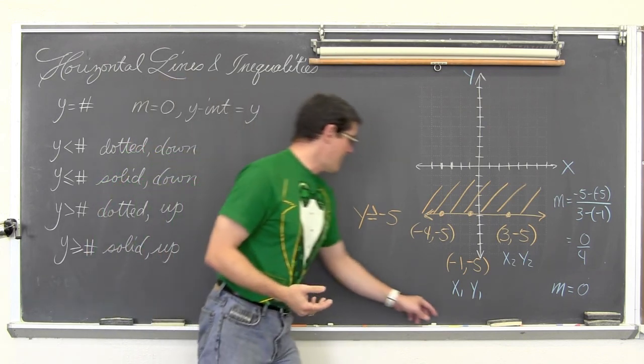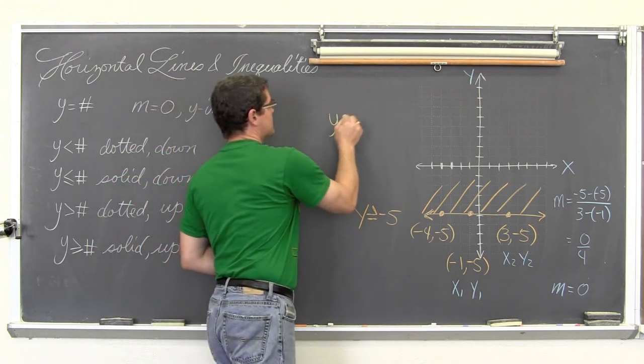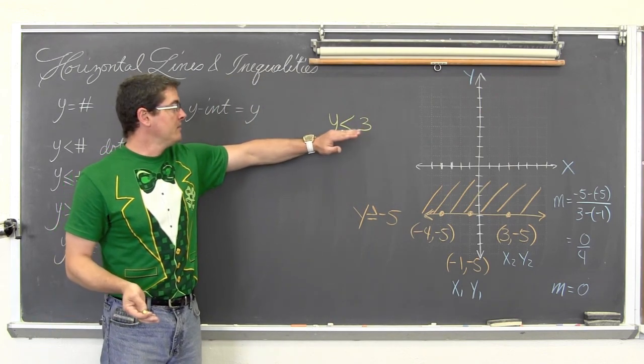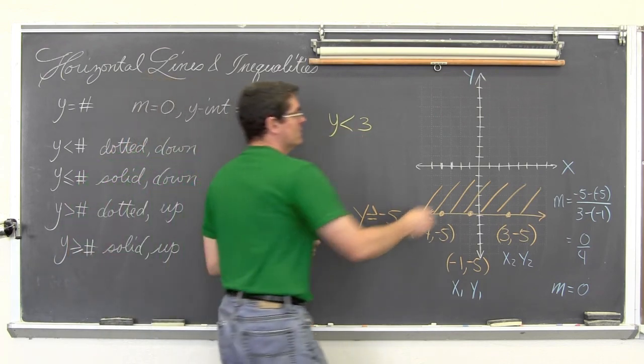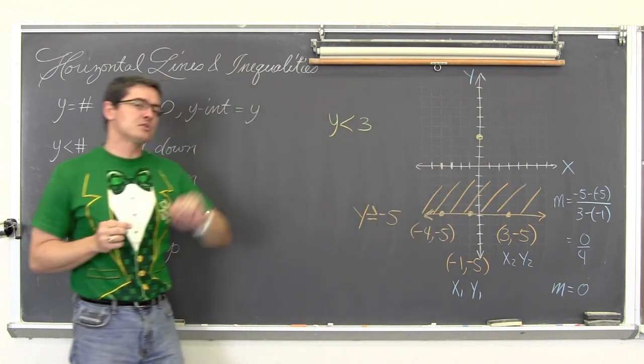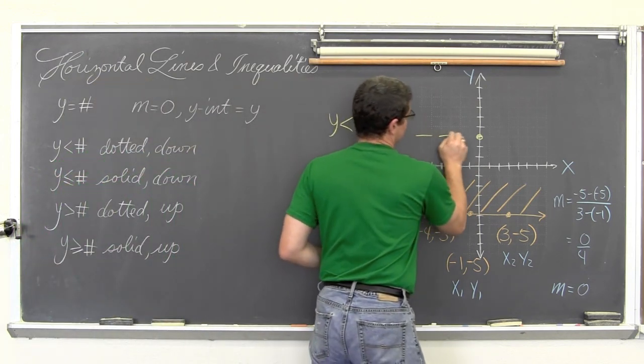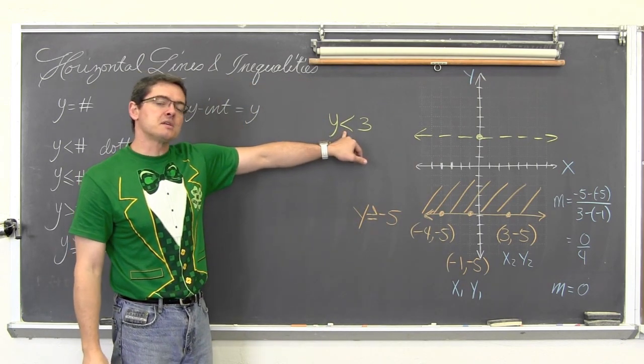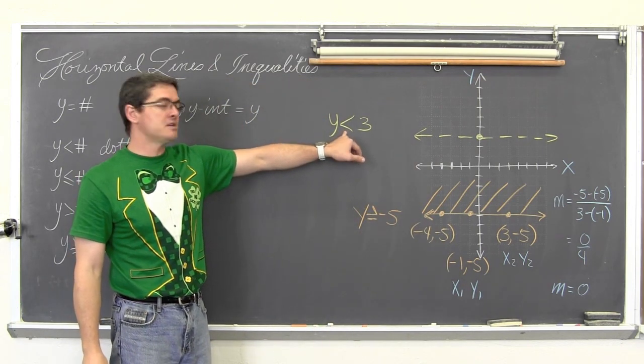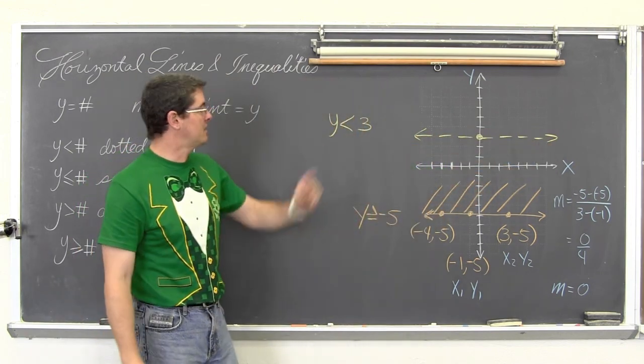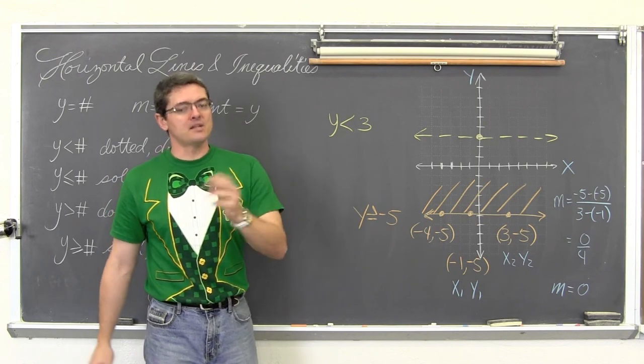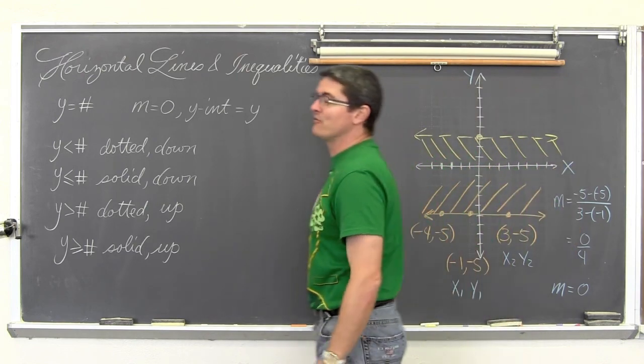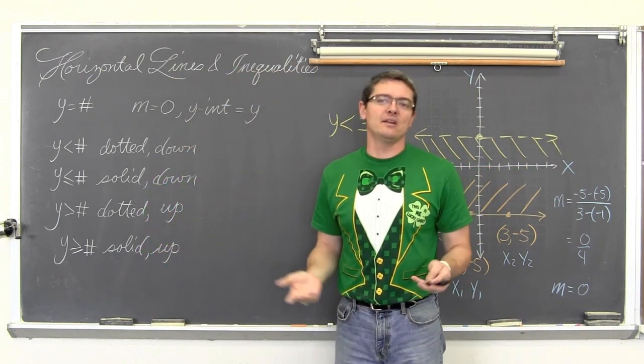If I add an additional example of y is, let's say, less than three. Well, y equals number, horizontal line, find the y value of three, which is right here. So I move up from the origin three units, draw that dotted horizontal line. Again, dotted because I have not included an equal sign as part of my inequality, so thus the line is not actually part of a solution set to this inequality. Y is less than, y gets smaller as you go down. And that is my introduction for graphing horizontal vertical lines and inequalities.